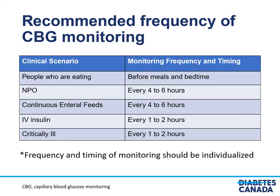For hospitalized patients requiring capillary blood glucose monitoring, the frequency and timing should be individualized and reflect the clinical scenario and requirements of the patient. For people who are eating, it is recommended that capillary blood glucose testing be done before meals and at bedtime. For those who are NPO, every 4–6 hours. For those on enteral feeds, every 4–6 hours. For those on IV insulin, every 1–2 hours. And for those who are critically ill, blood sugars should be measured every 1–2 hours.